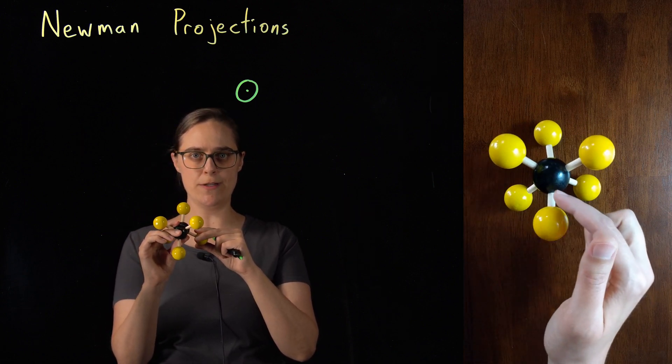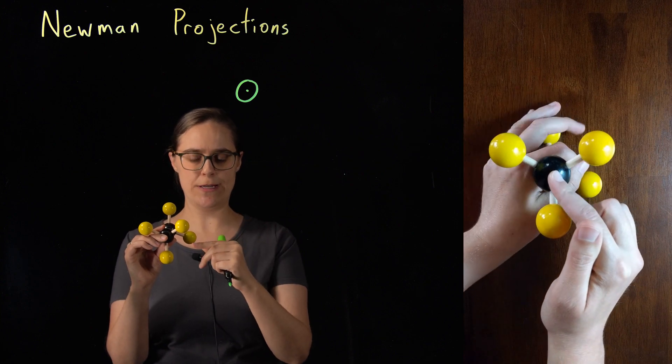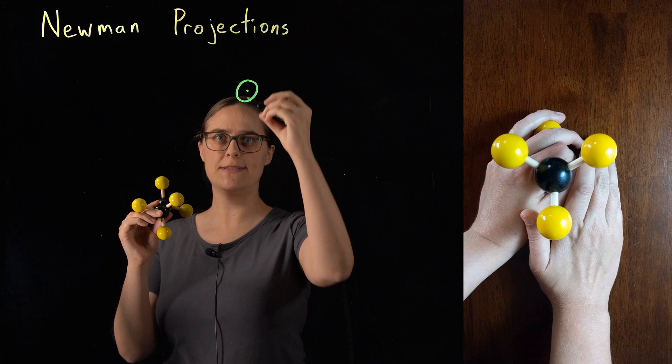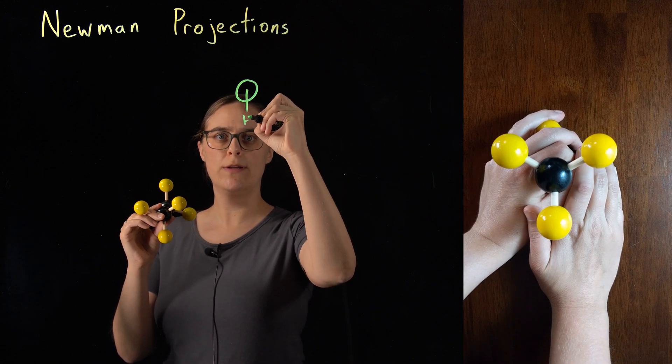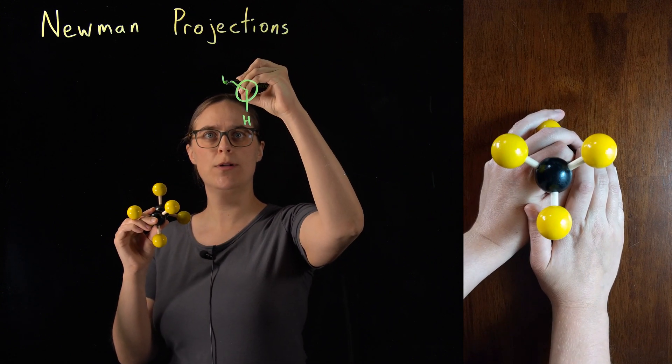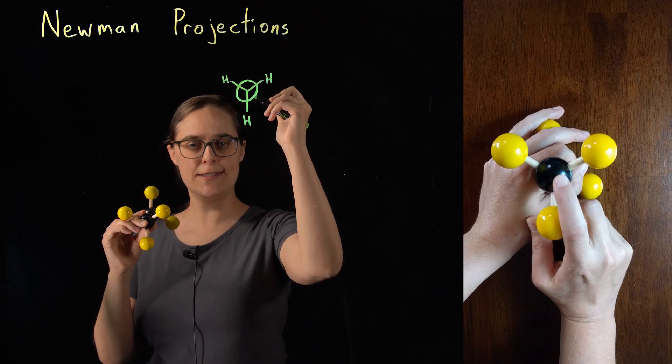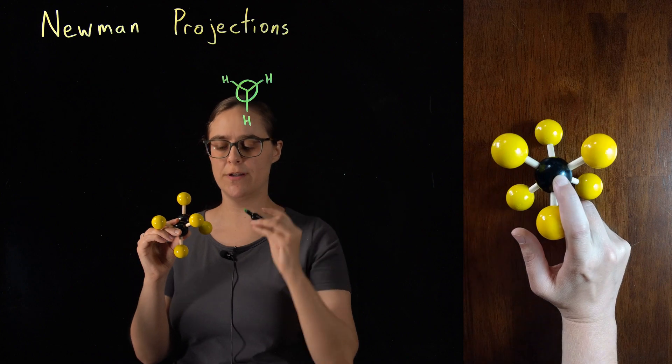The carbon in the front has three hydrogens. In this particular orientation and this conformation, one of the hydrogens is down, one is up and to the left, one is up and to the right. Notice that I drew these bonds from that dot in the center that was representing the front carbon.